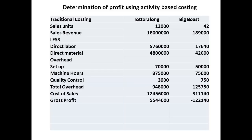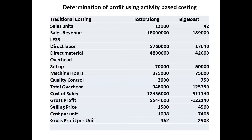We now have some interesting figures emerging. The gross profit when we subtract cost of sales from revenue is $5,544,000 for the moped, but the luxury bike — the big beast — is actually making a loss of $122,140. The cost price of the big beast exceeds the selling price. Each moped is producing $462 of profit, whilst each luxury bike is actually costing the business almost $3,000. Activity-based costing suggests that production of the moped should not be lowered, but that costs associated with the big beast should be reviewed. One factor that might be considered is the very high cost of setups — perhaps the big beast should only be produced once a year using a single setup.